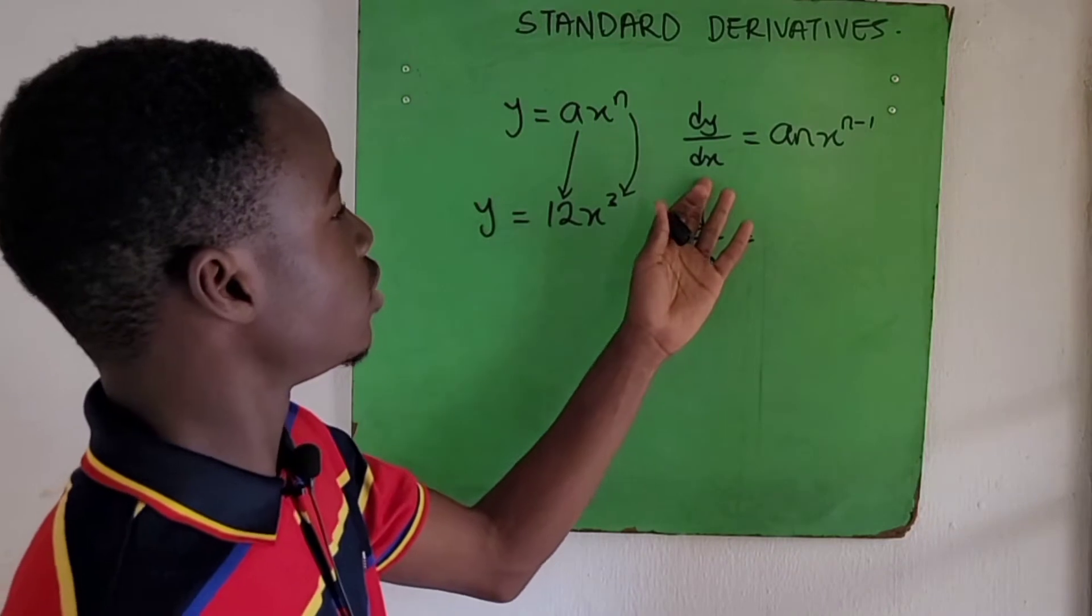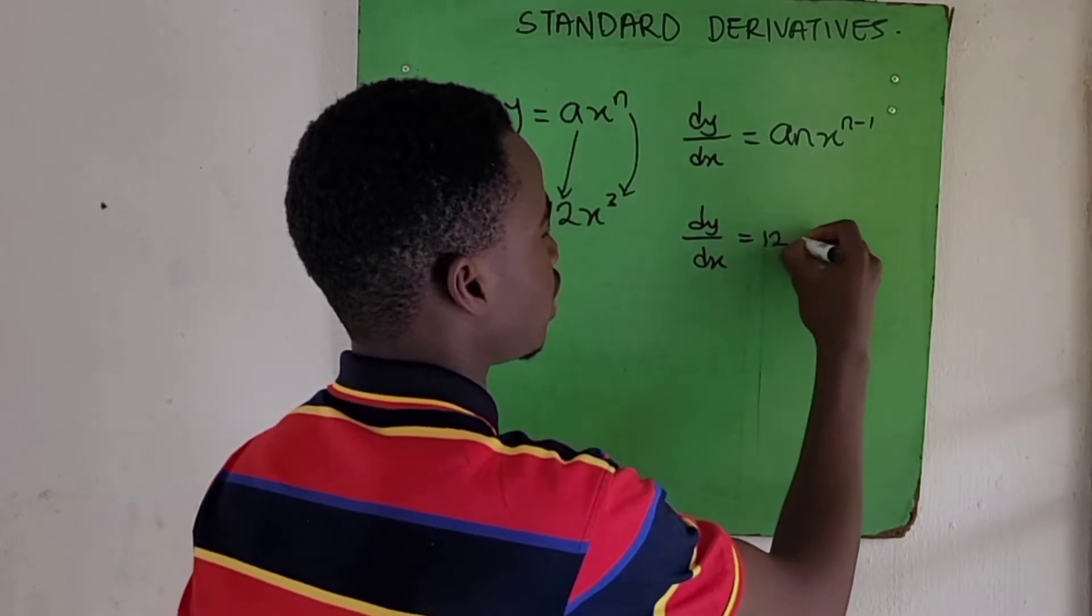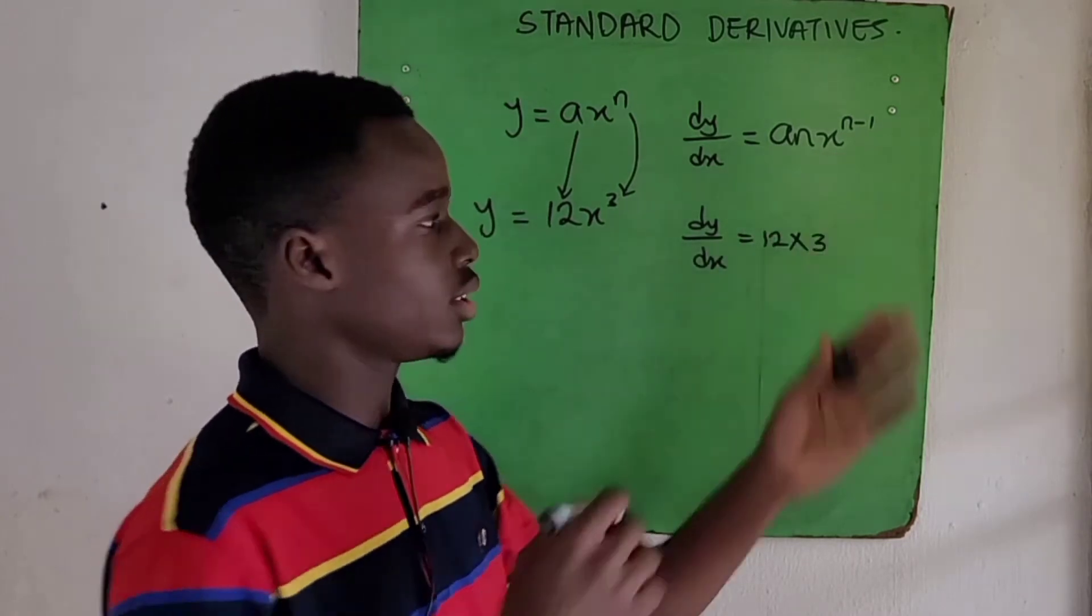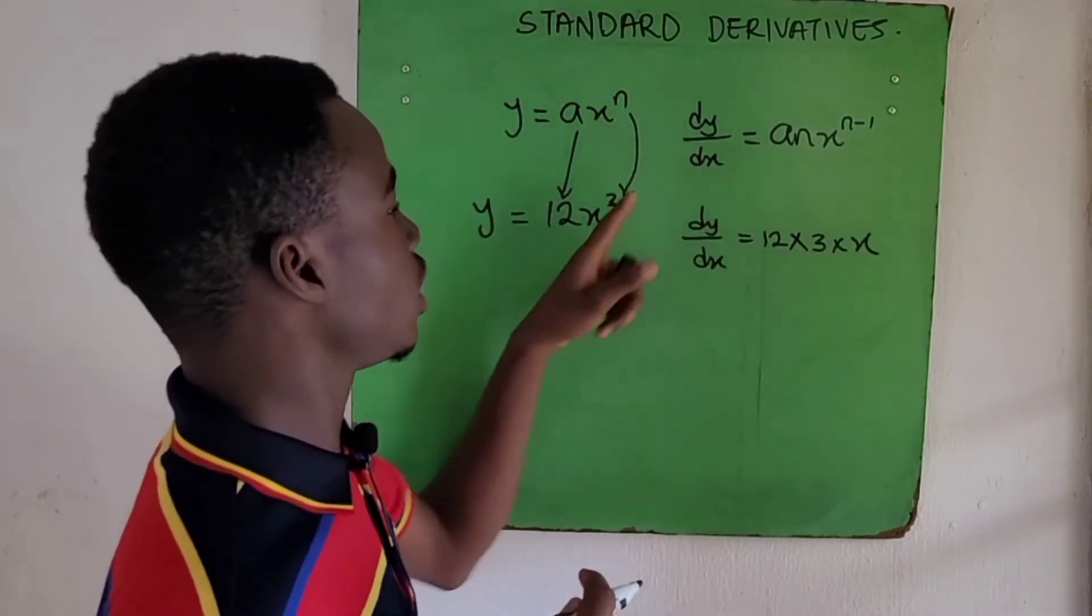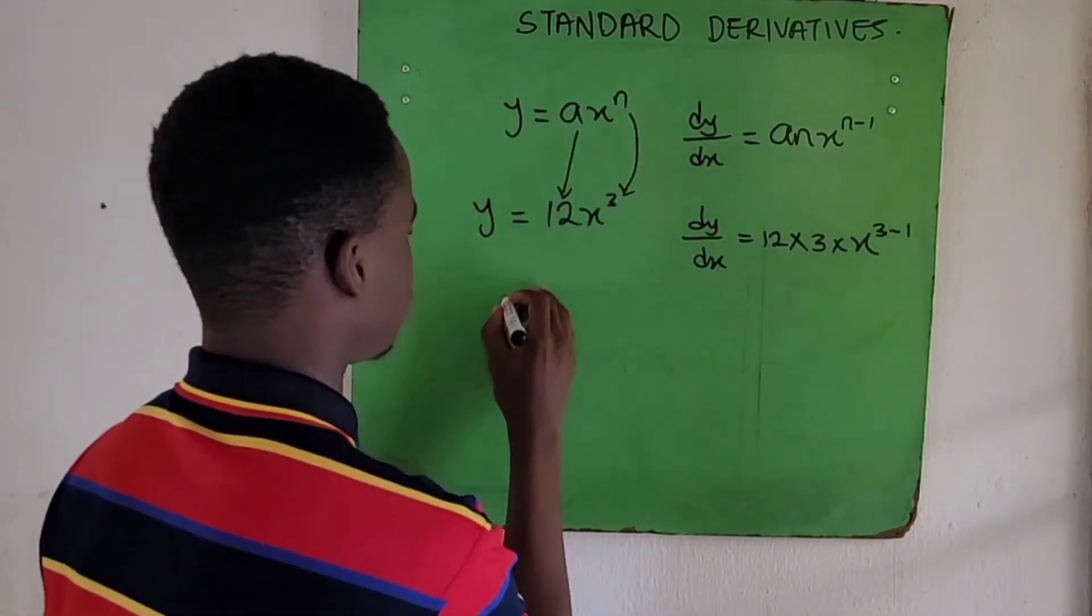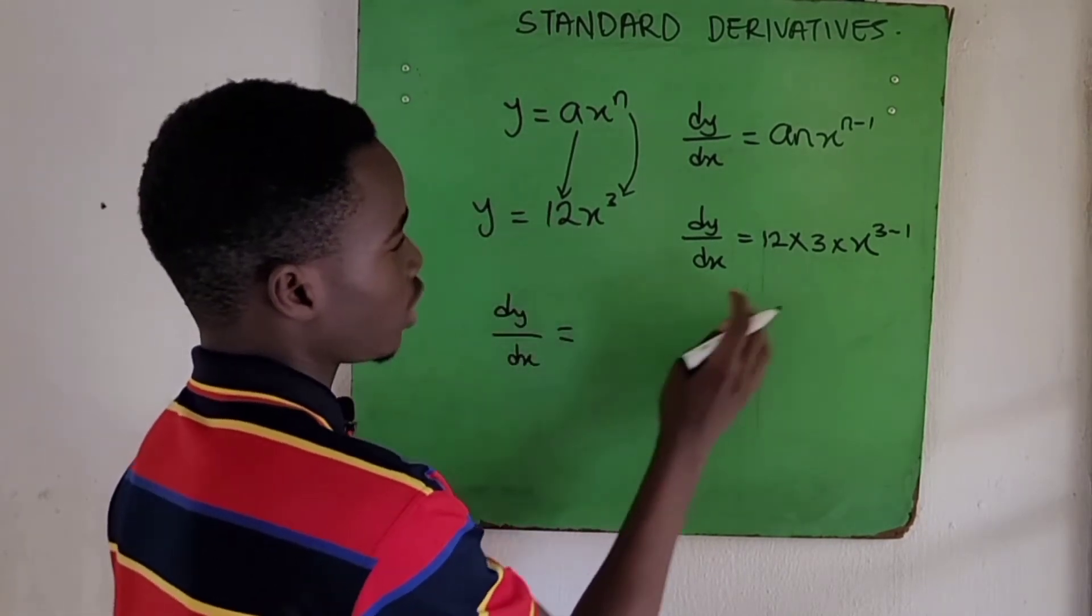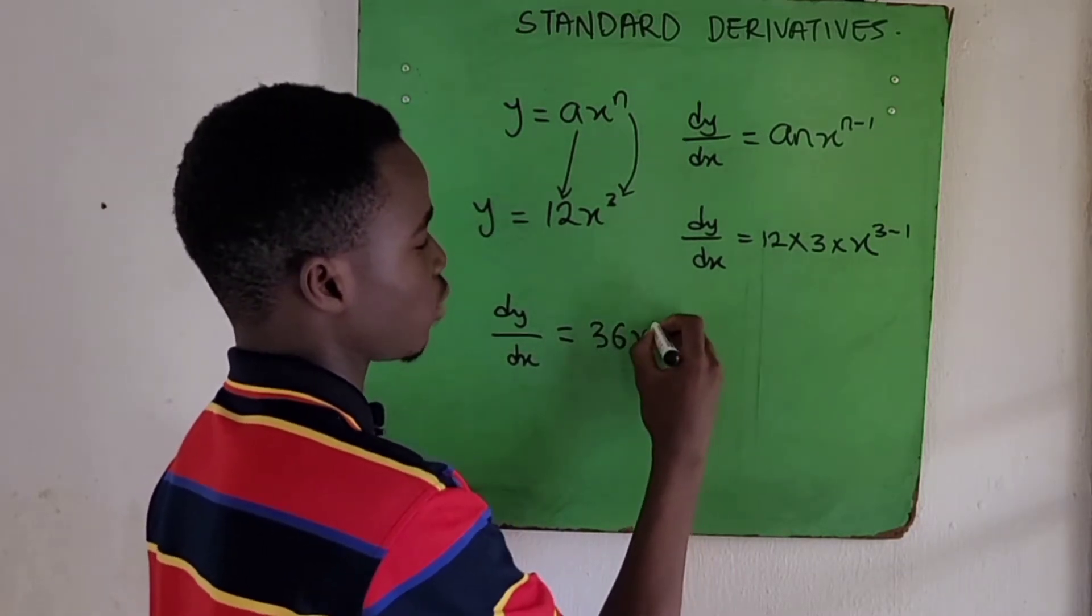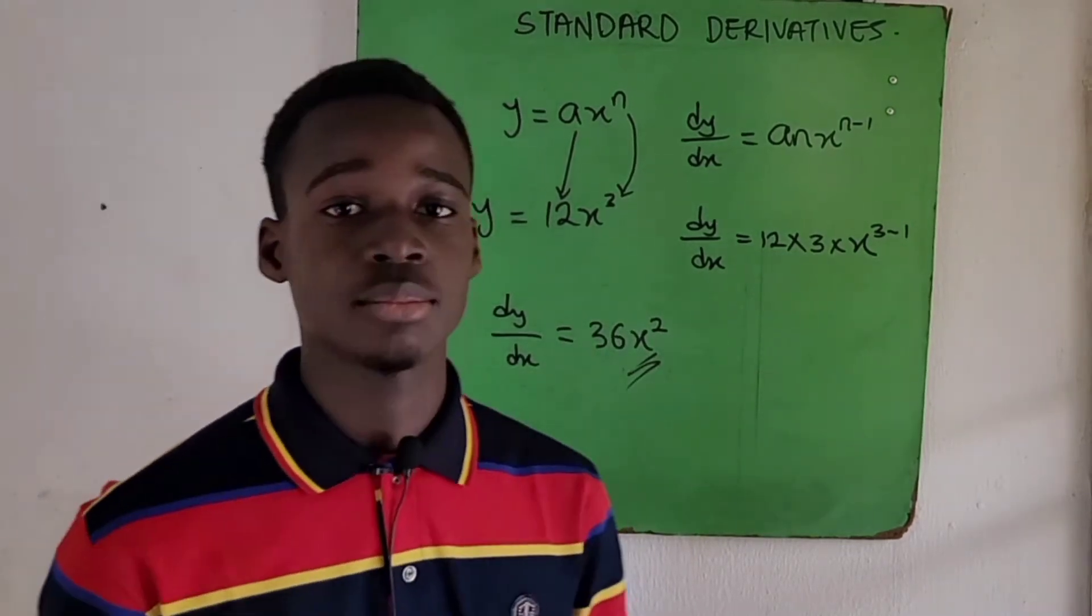So now the differential equation will be a times n. Our a is 12 times our n is 3, so that will be the coefficient of x. Then we have x, then the new power will be n minus 1, which is 3 minus 1. So solving for that, dy/dx equals 12 times 3 is 36x^(3-1), so we have 36x².